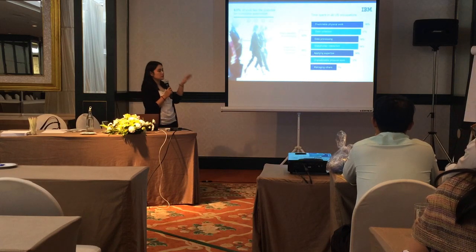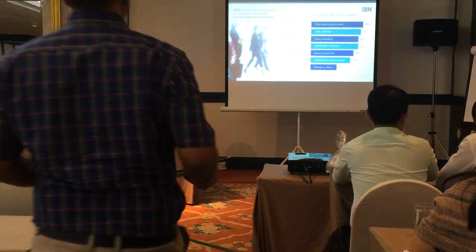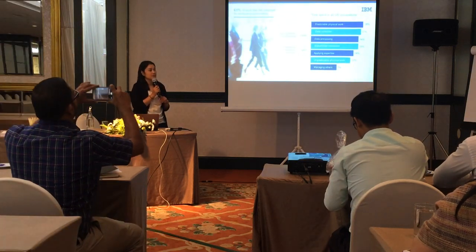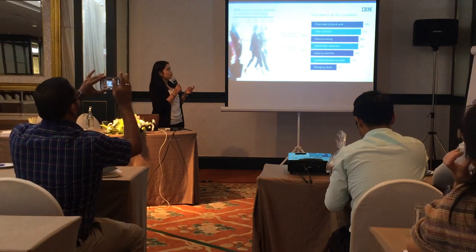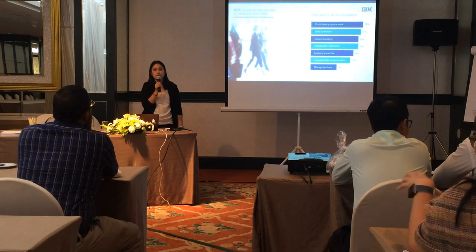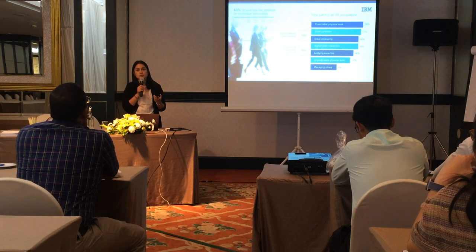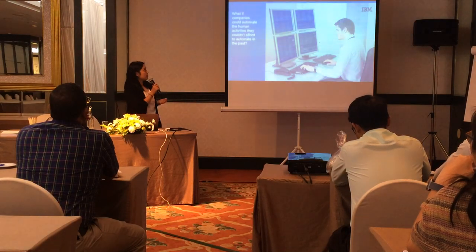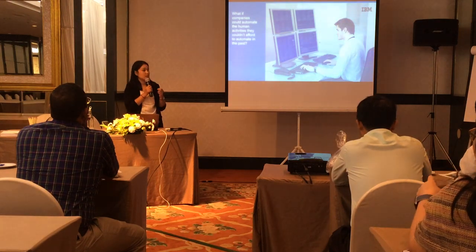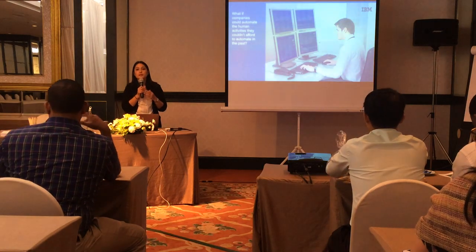If you look into the research, I think most of the time we spend on automation tasks — more than 50% of work has the potential for workplace automation. For example, processes and stakeholder interactions — this kind of task can be automated with software robotics. What if we could automate the human activities that couldn't be afforded to automate in the past, with IBM Robotic Process Automation?